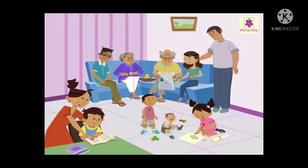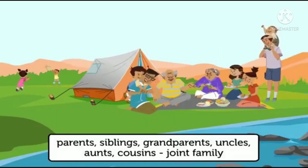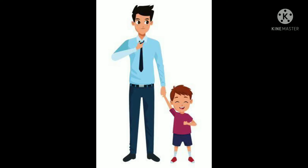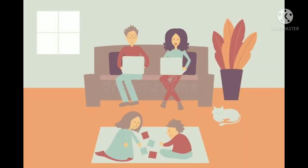Joint family is a larger family — larger than a nuclear family. Several families staying together is called a joint family, which consists of grandparents, uncles, aunts, and cousins, where you have a lot of fun. Apart from this, there are some families without both parents — either father or mother — because one parent might have died or there may be reasons behind the separation. Such a family with either father or mother and a child is known as a single parent family or one parent family.